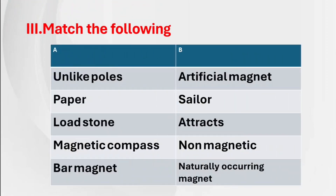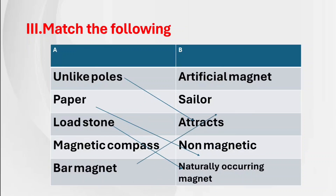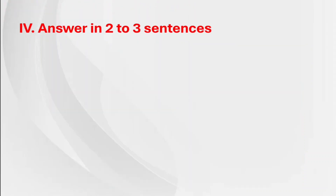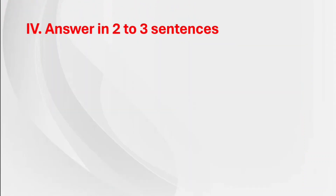Third main — match the following: Unlike poles — attracts. Paper — is non-magnetic. Lodestone — it is a naturally occurring magnet. Magnetic compass — is used by sailors. Bar magnet — it is an artificial magnet.